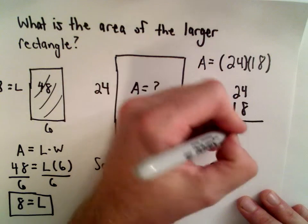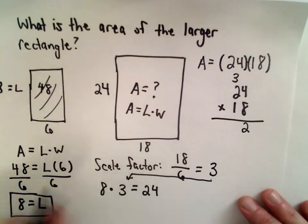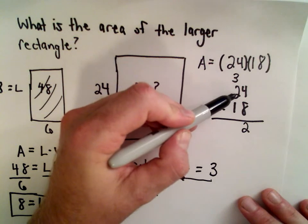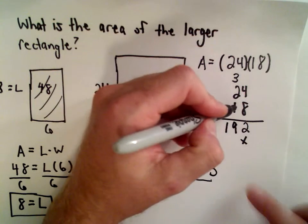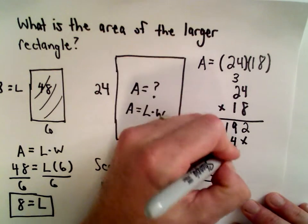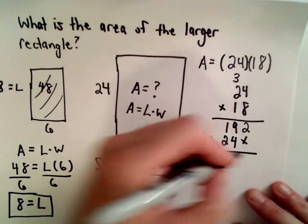8 times 4 is 32, so I'll drop down the 2 and carry the 3. 8 multiplied by 2 is 16. 16 plus 3 is 19. And then we'll do 1 times 4, which is 4. 1 times 2, which is 2. We'll add those together.